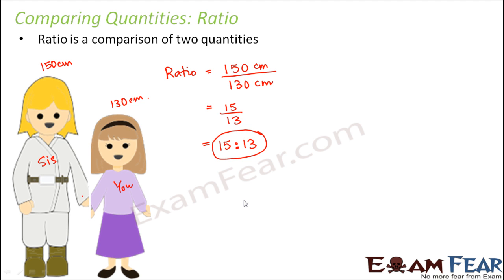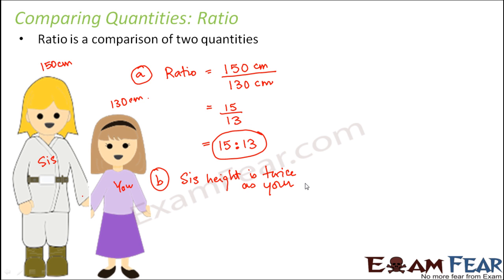Now there are other ways of expressing ratio. That was one way where you have values of both quantities and find the ratio. Another way could be: let's say there are another two sisters where the sister's height is twice your height. In that case, the ratio would be 2 divided by 1, written as 2 is to 1.